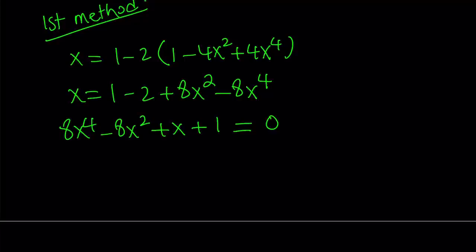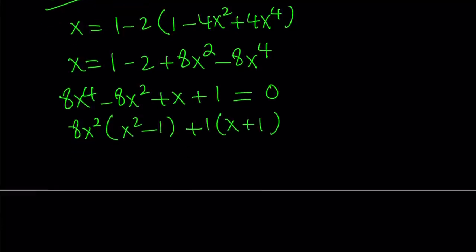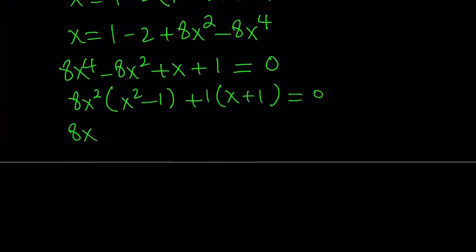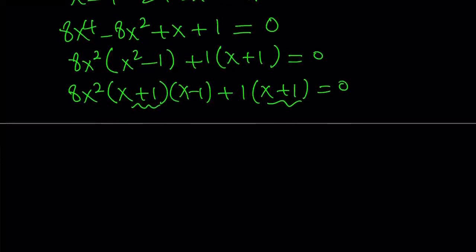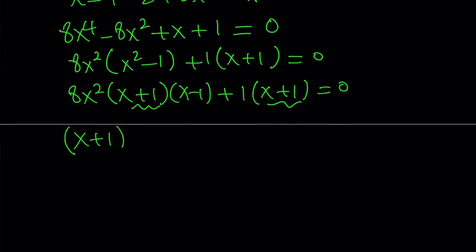Now this equation is factorable. For example, if you group and take out 8x squared, you get x squared minus 1. And x squared minus 1 is factorable by difference of two squares, so I can write it as (x+1)(x-1). Now we can go ahead and take out x plus 1 as a common factor, and then we have 8x squared distributed over the x minus 1: 8x cubed minus 8x squared, plus 1 equals 0.